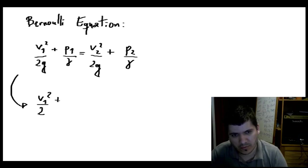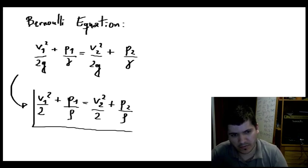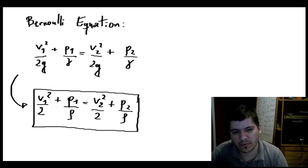So then we arrive at V₁² divided by 2 plus P₁ divided by the density equals V₂² divided by 2 plus P₂ divided by the density. This is the equation which is most familiar to you—the Bernoulli equation.